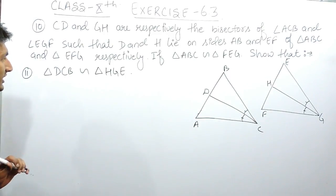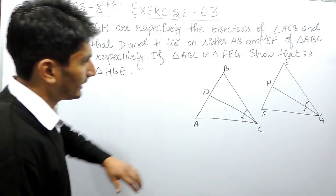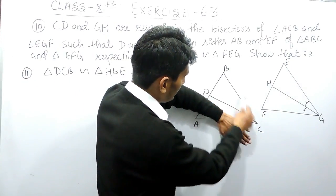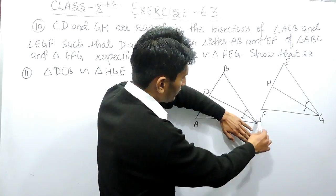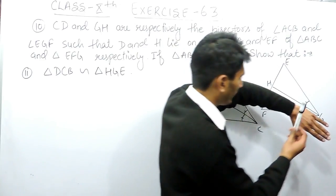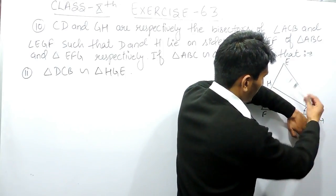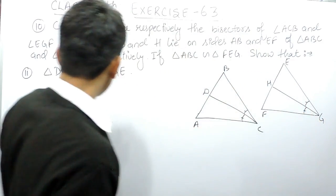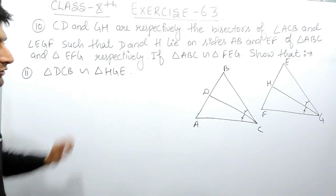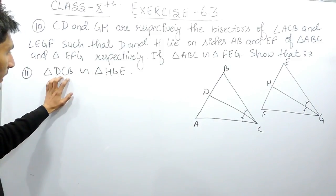In this case you have to prove that triangle DCB is similar to triangle HGE. This DCB is the first triangle and you have to prove it is similar to triangle HGE. To prove that these two triangles are similar, you need to prove that two angles of this triangle are equal to two angles of that triangle.